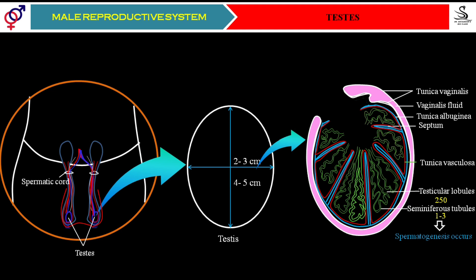The seminiferous tubules play a very important role. The process of spermatogenesis — that is, sperm production — occurs inside the seminiferous tubules. Male gametes (sperms) are produced inside the seminiferous tubules. So if you are asked where sperms are produced, your answer must be precise: sperms are produced inside the seminiferous tubules, not simply 'in the testis.'